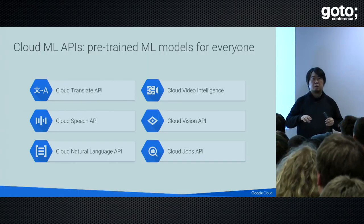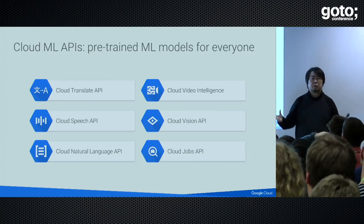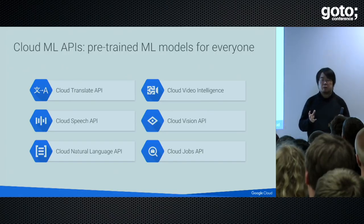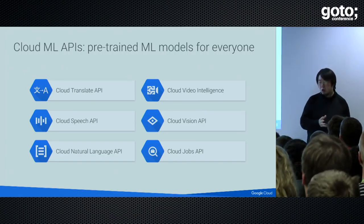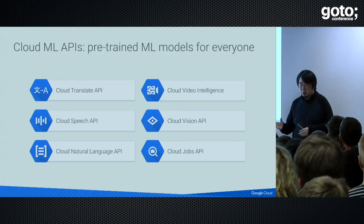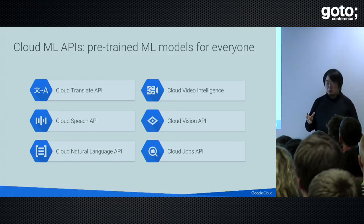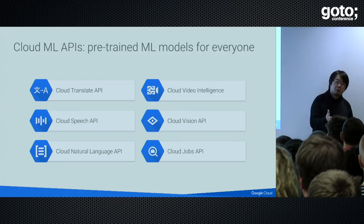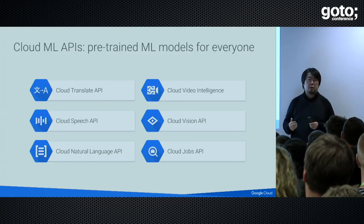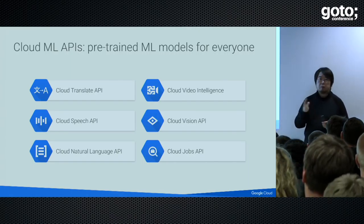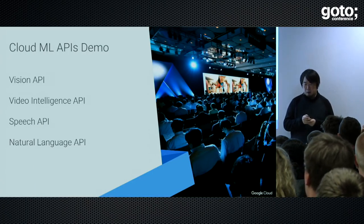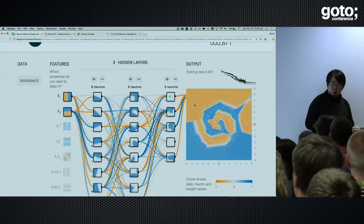Machine learning APIs are a wrapper for pre-trained models. Google has been training many different models for image recognition, voice recognition, and natural language processing. All you have to do is upload your image, audio, or text file to the API, and that's it. You don't have to have any expertise or knowledge about machine learning. Let's take a look at the actual demonstration.